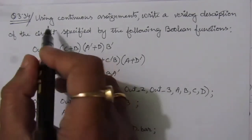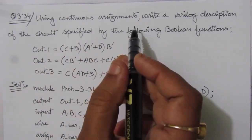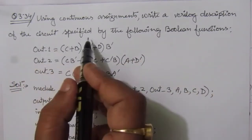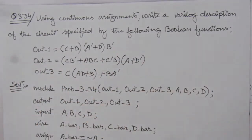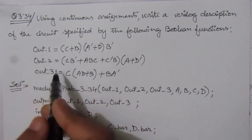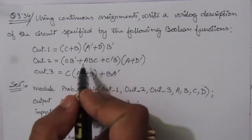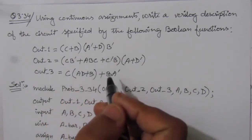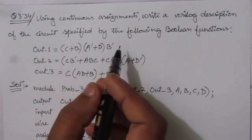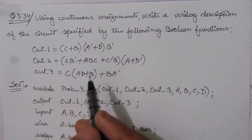The problem is using continuous assignments — that means we have to write a continuous assignment. We need to write a Verilog description of the circuit specified by the following boolean functions. We are given three boolean functions: output 1, output 2, and output 3. We can see that we have four input variables A, B, C, D, and we have to write the Verilog description of the circuit represented by these equations.